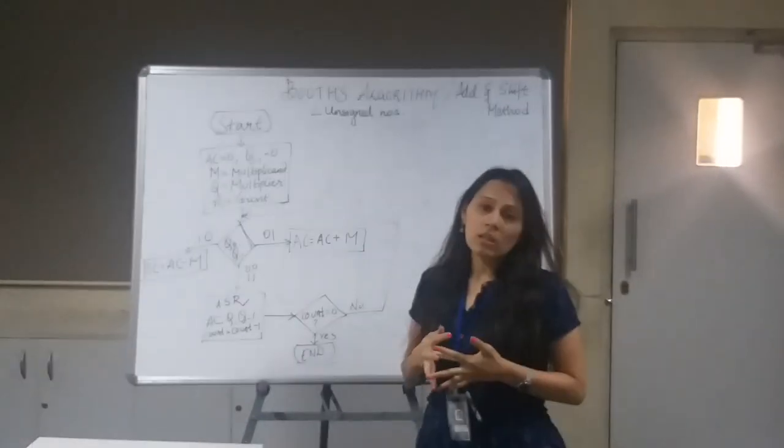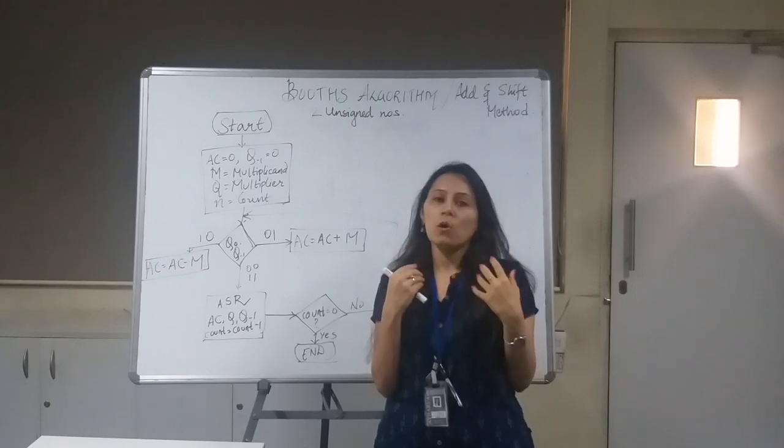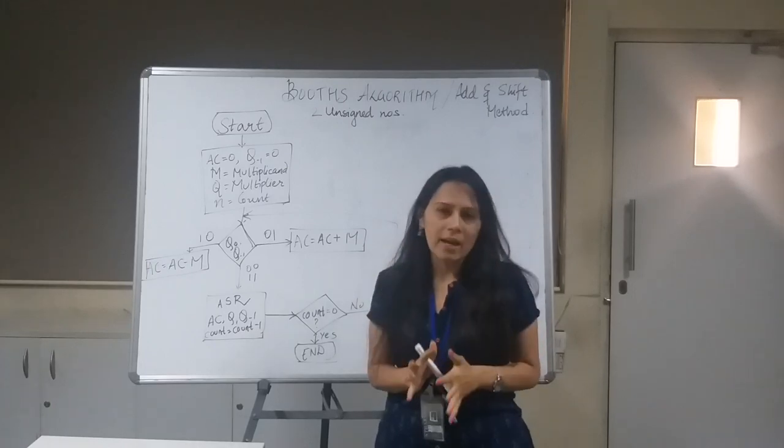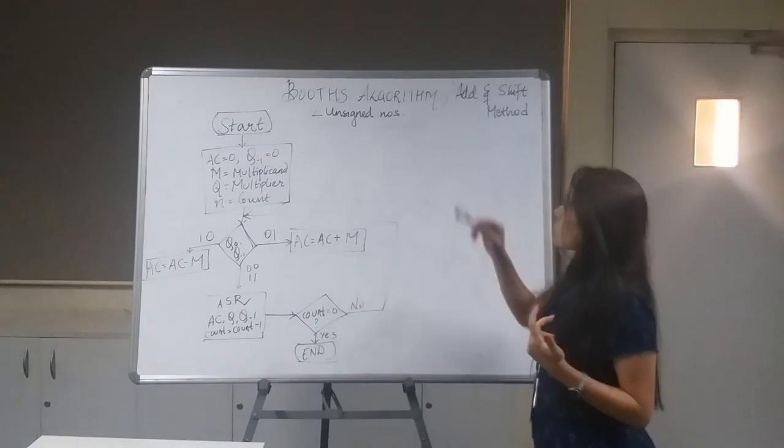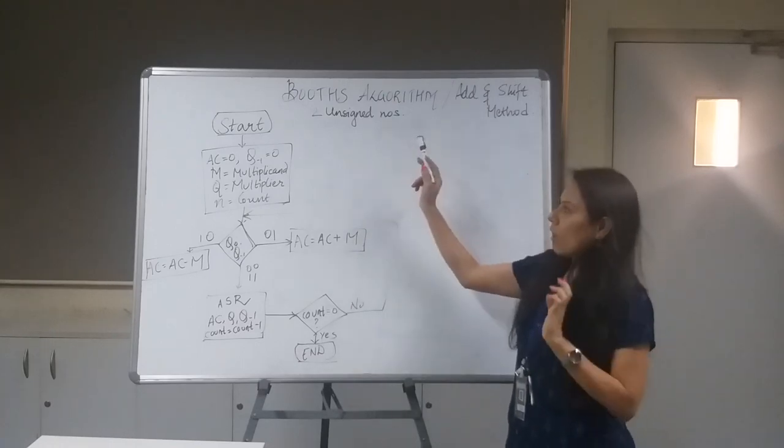Hi everyone, so today we are going to learn Booth's algorithm. This algorithm is basically used for multiplication of two unsigned numbers. It's also known as the add and shift method. Now here is the algorithm, so first start.